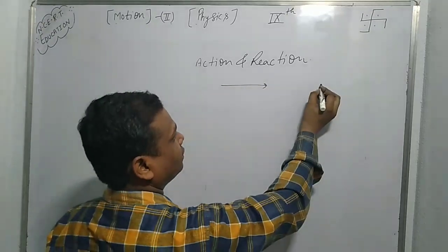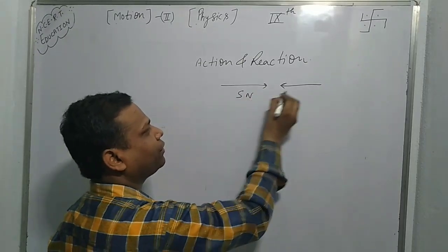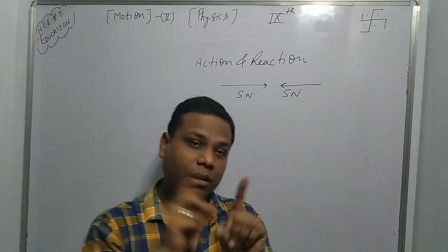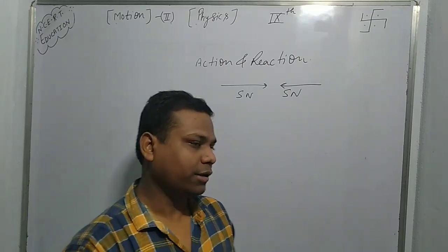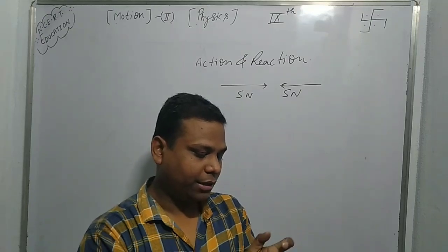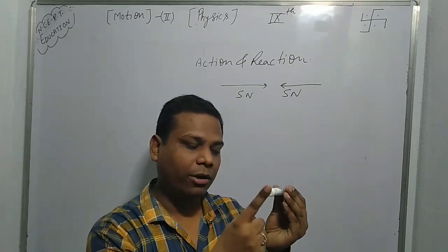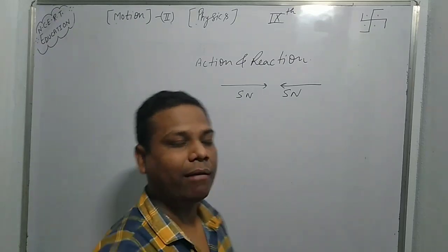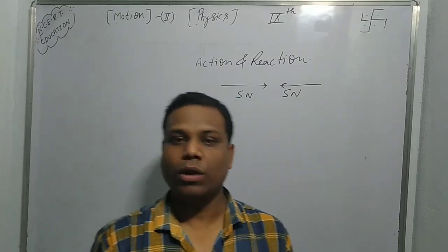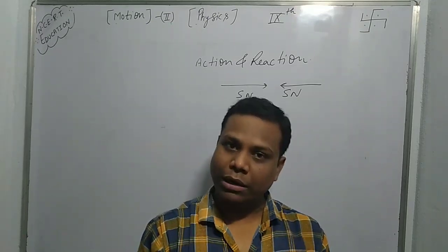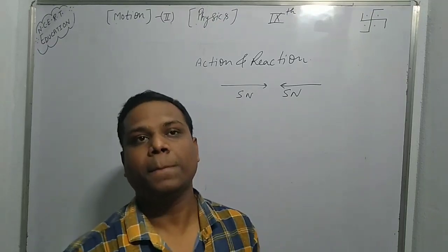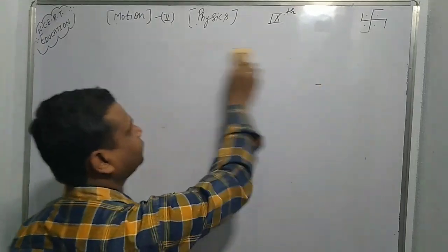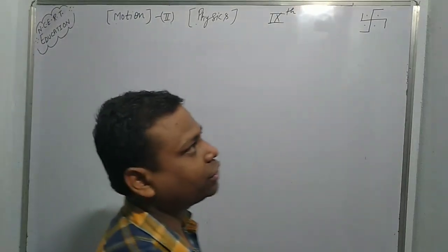Every action force has a reaction force in the positive direction, equal in magnitude. If one force is 5N, the reaction is also 5N. However, these two forces are applied on different objects. For example, if we apply 2N on this object, a 2N force is also applied back on the other object. So every action force has a reaction force equal in magnitude but opposite in direction.